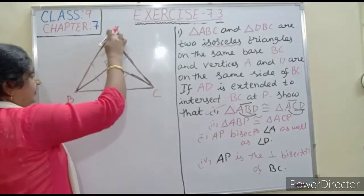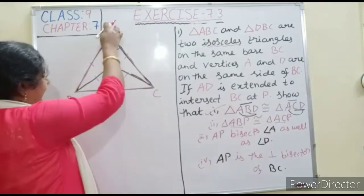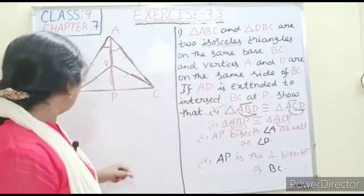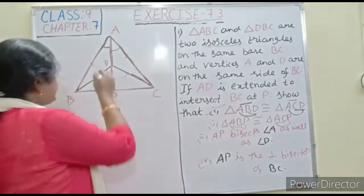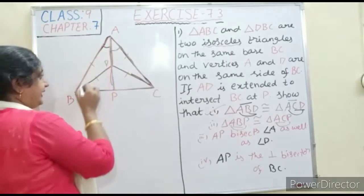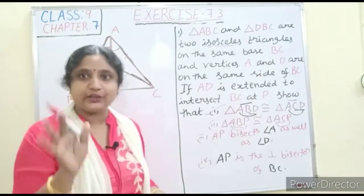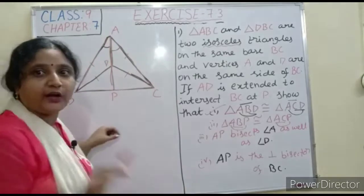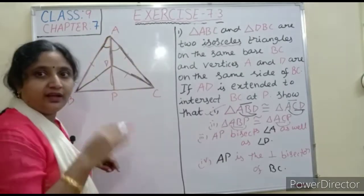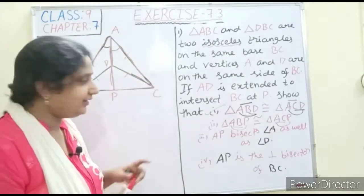From the congruent triangles, AB equals AC. AP is common. And since triangle ABD is congruent to triangle ACD by part one, the included angles are equal. So by the SAS congruence rule, triangle ABP is congruent to triangle ACP. Second part is also over. When these two triangles are congruent, BP equals PC, since BP and CP are corresponding sides.